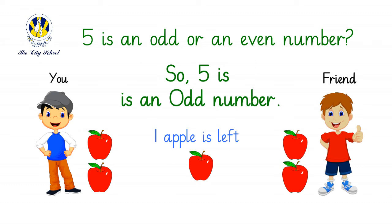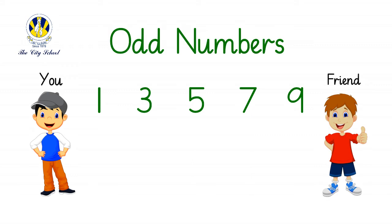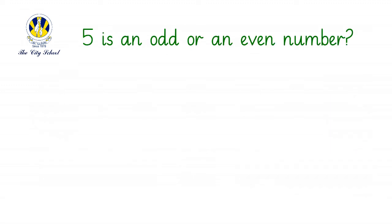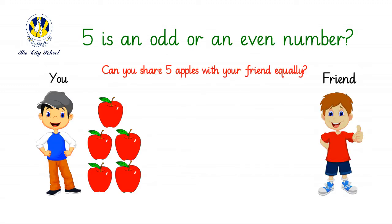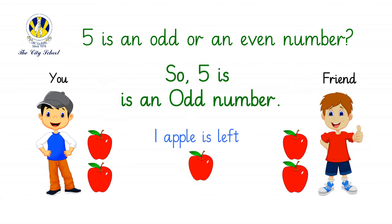Good job! Now, don't forget: one, three, five, seven, and nine are odd numbers. And all numbers ending with them, like 19, 17, 25, 13, and 41, are odd numbers. Excellent job! We have learnt that any number of things that cannot be shared equally are odd numbers.